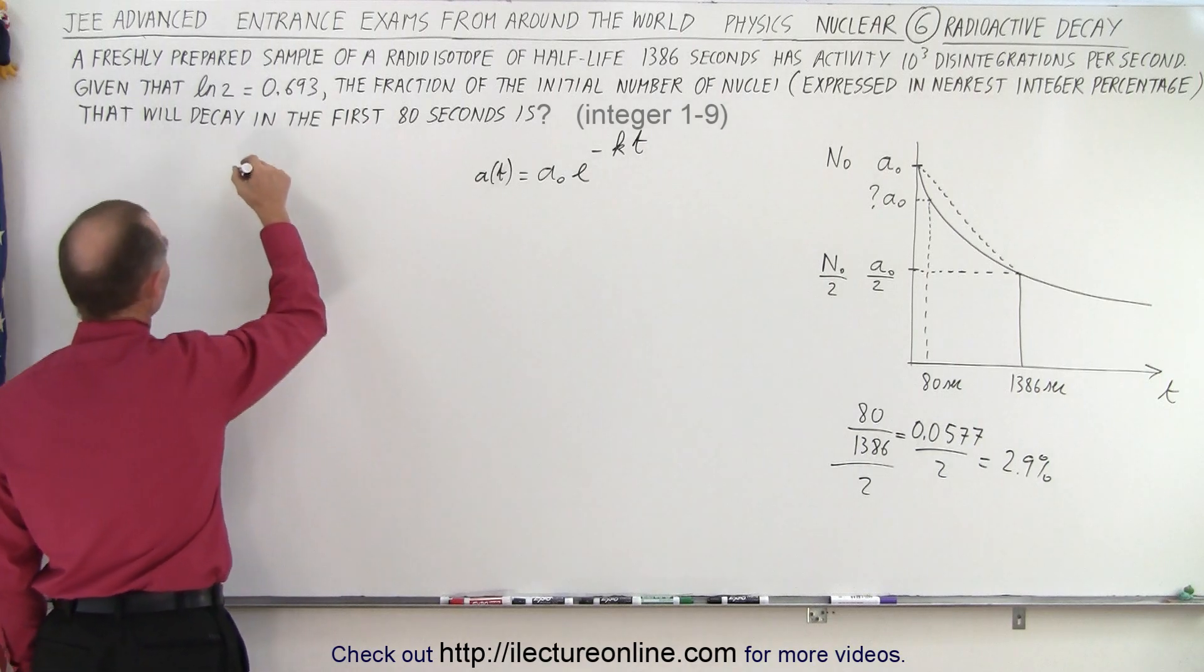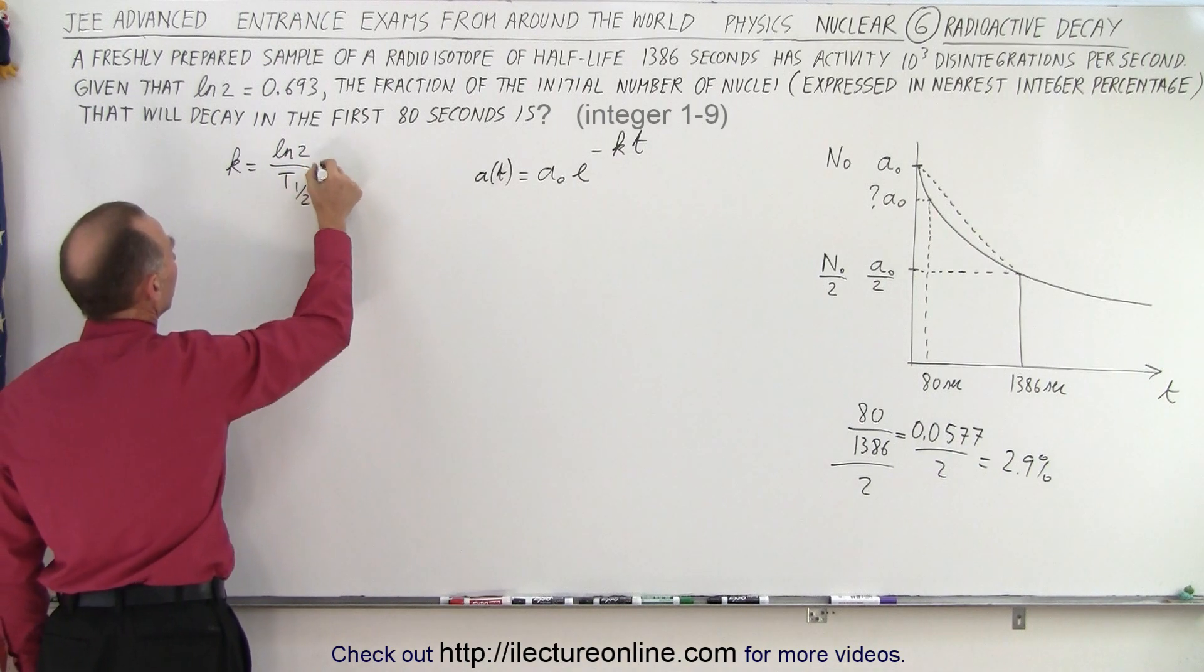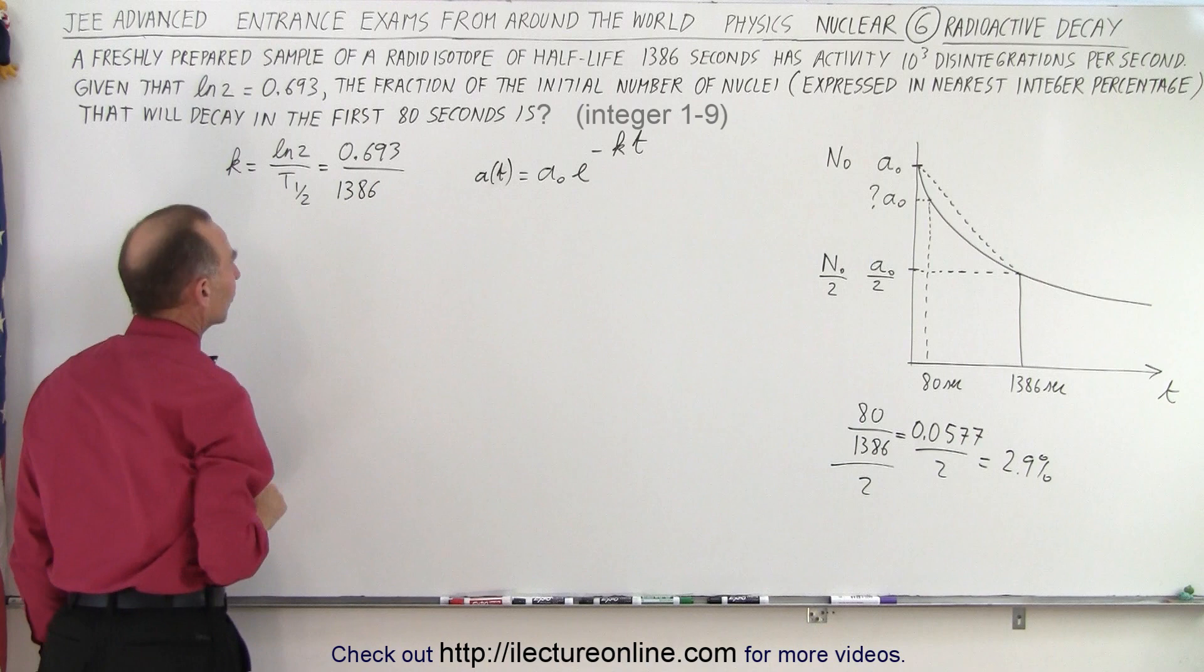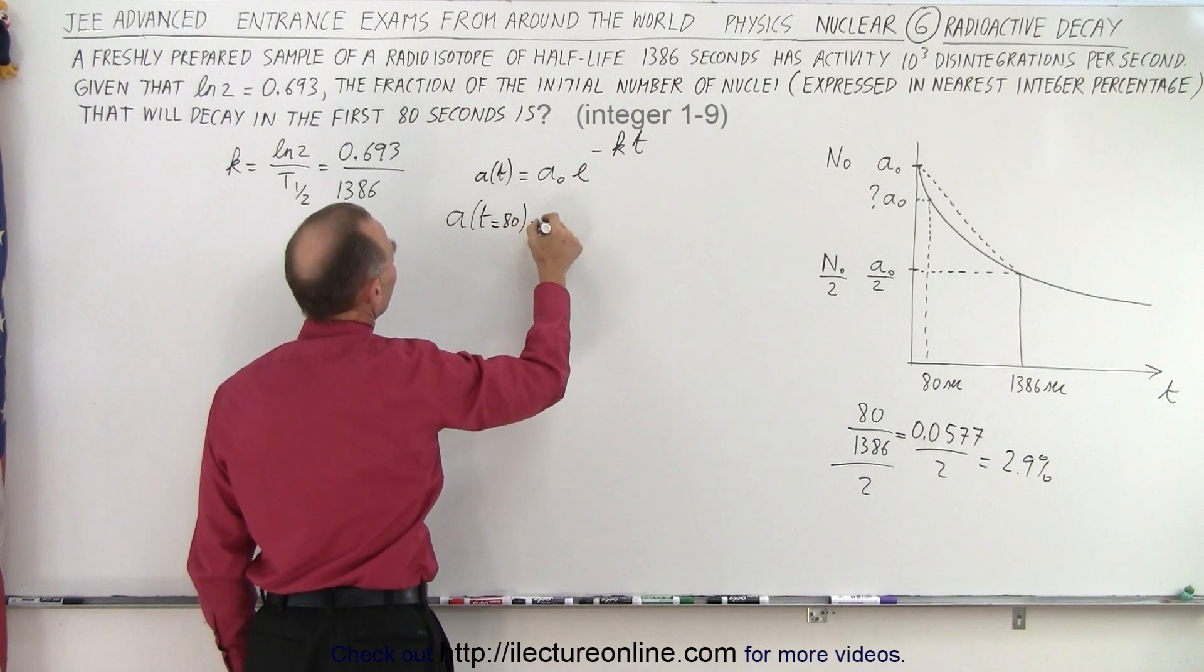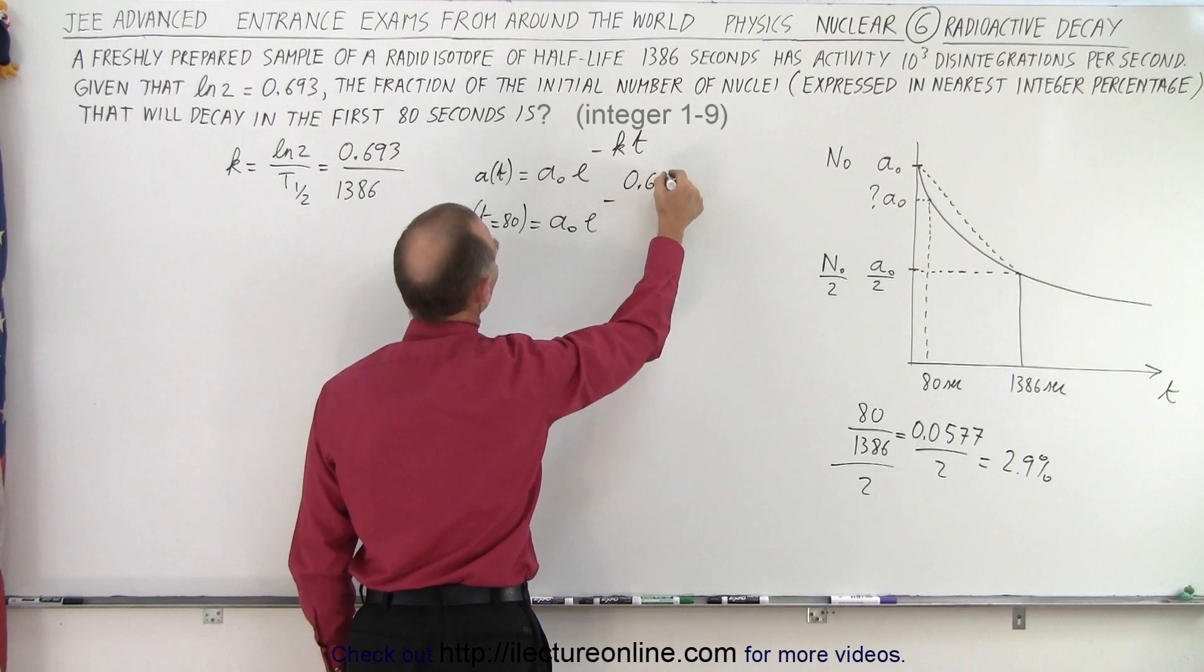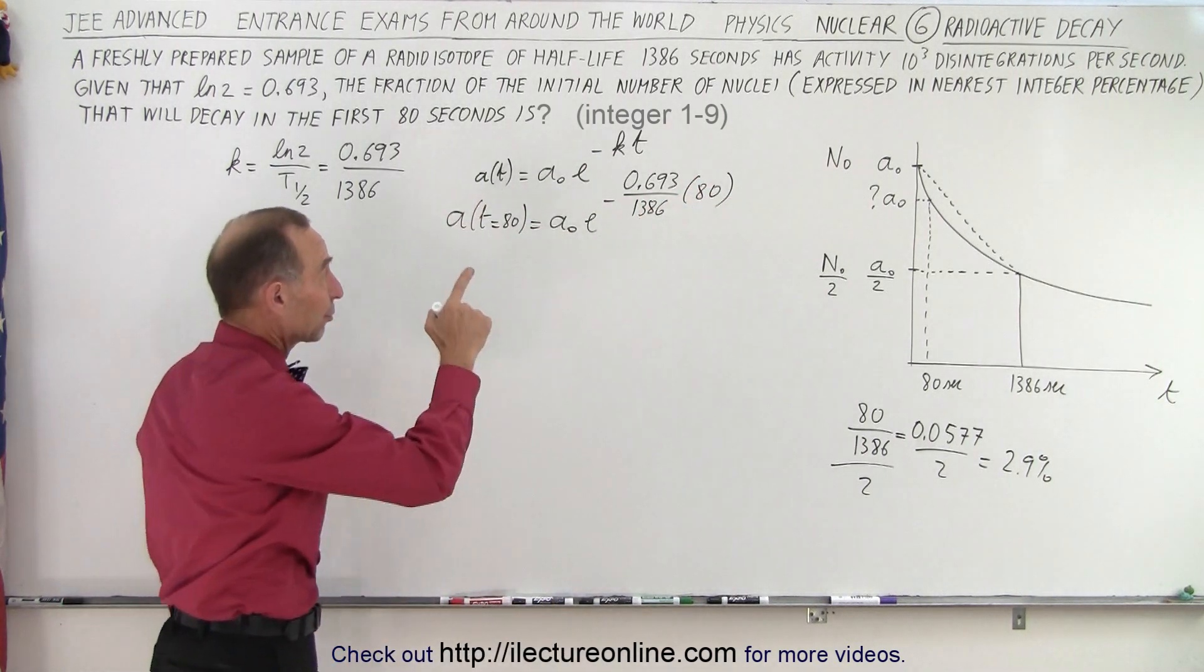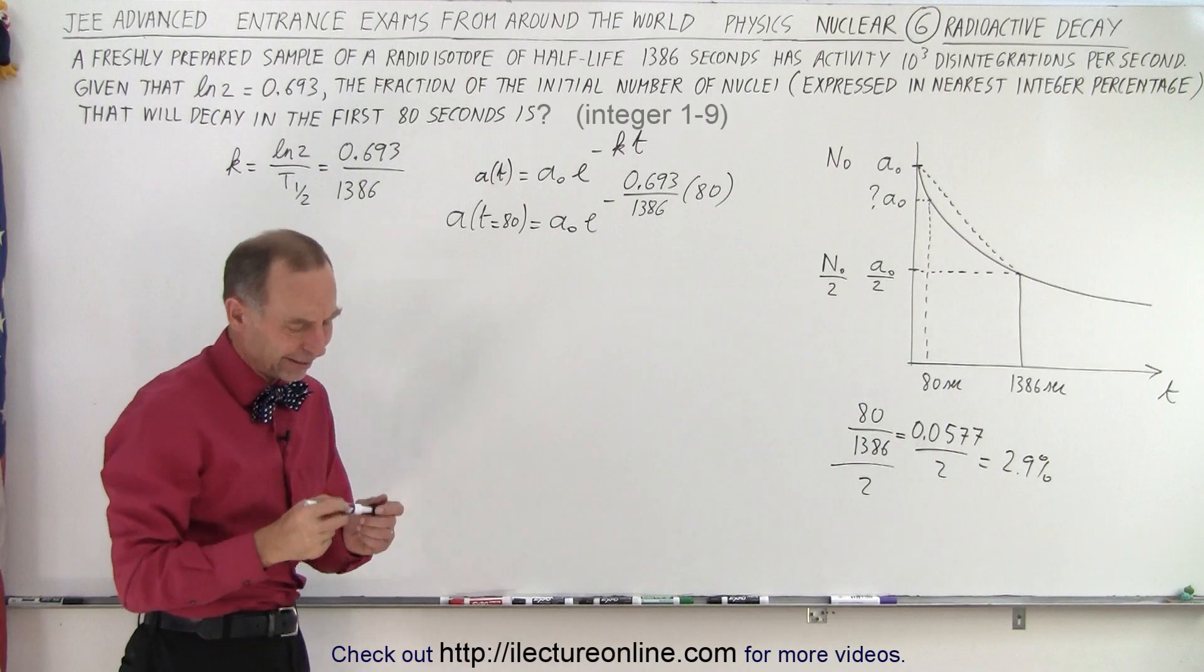And where that decay constant comes from is as follows: you can say that k is equal to the natural log of 2 divided by the half-life. In this case that would be 0.693—because they were kind enough to give us the natural log of 2—and then the half-life is 1386 seconds. So essentially, A as a function of time when time equals 80 seconds is equal to the original activity times e to the minus k, which now becomes 0.693 divided by 1386 and multiply that times 80. And that's the problem: you would have to work that out by hand, work out 80 times 0.693 and then divide that by 1386—that'll probably take about a minute or so.